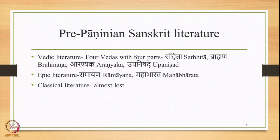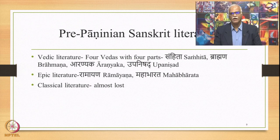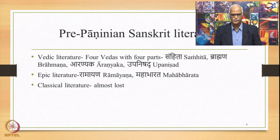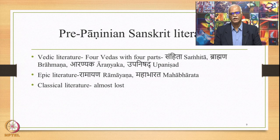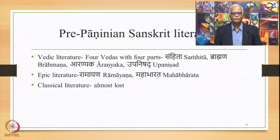Now let us take a look at the pre-Paninian Sanskrit literature. We have Vedic literature to begin with — four Vedas with four parts: Samhita, Brahman, Aranyaka, and Upanishad. Then there is epic literature: Ramayana and Mahabharata. Then there are various other kinds of literature related to the Vedas, related to the Karma Kanda. Apart from that, there is classical literature which is almost lost to us in the course of time.